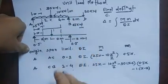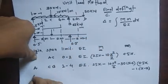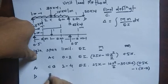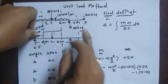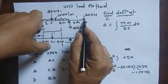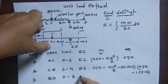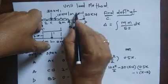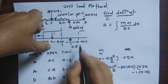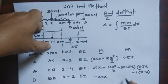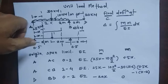The remaining section has origin at B, span B to D, with x measured from B and limit 0 to 2. EI is EI. The bending moment due to the actual load is M = minus 20x (hogging due to the overhang load). For the unit load case on this span, there is no unit force contribution, so m = 0.